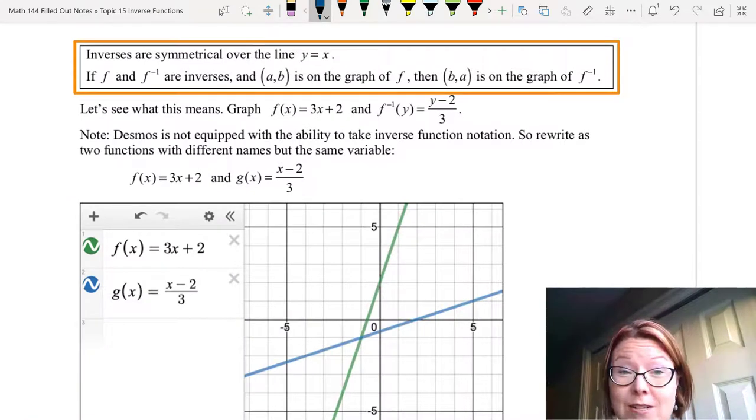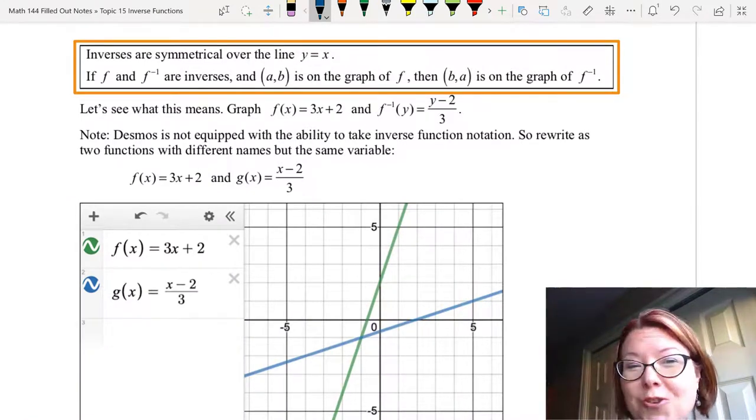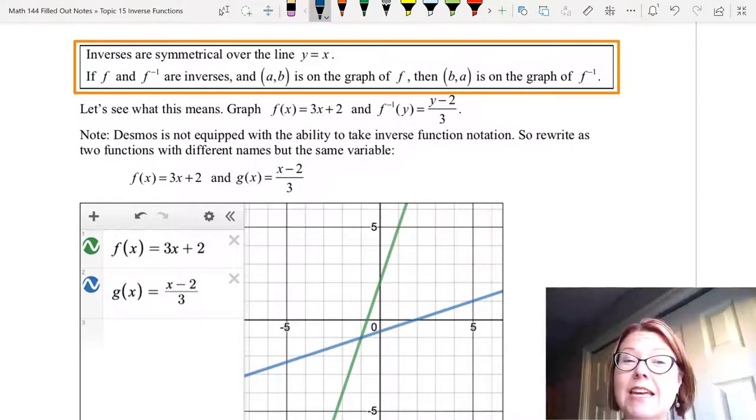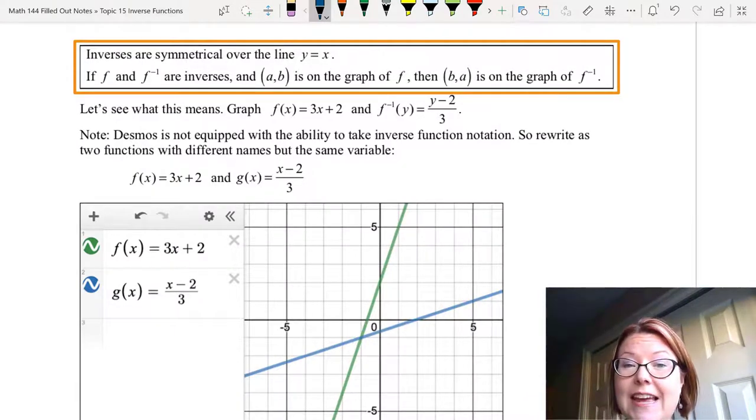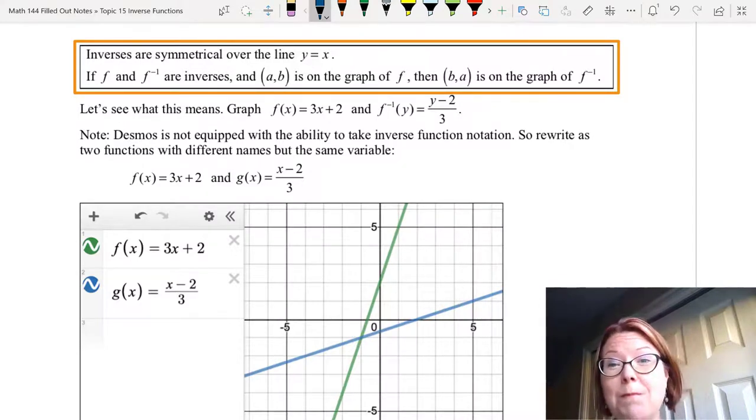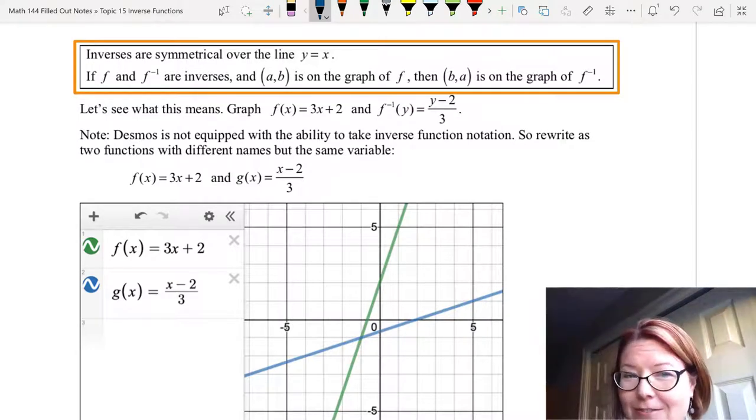The next property of inverses is that inverses are symmetrical over the line y equals x. In other words, if f and f inverse are inverses and the point (a, b) is on the graph of f, then the point (b, a) is on the graph of f inverse.